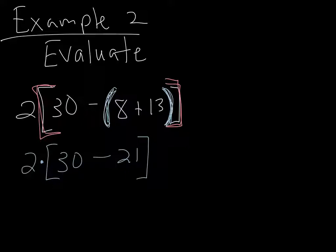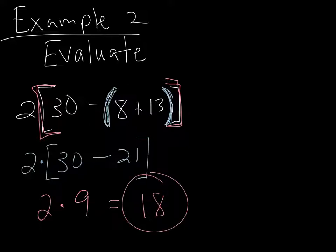Okay, so what next? Well, we still have grouping symbols. So we have to do what is inside the grouping symbols first. We have multiplication. We have this multiplication dot right here, but we have to deal with whatever's inside the grouping symbols first. And 30 minus 21 is 9. We still have 2 times 9. And 2 times 9 is 18. There's our finished value. There's our evaluated expression.